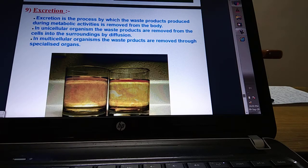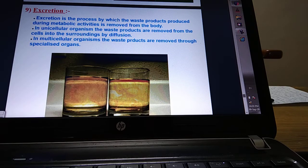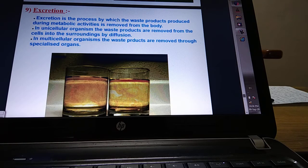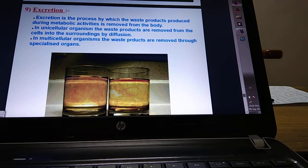These nitrogenous wastes are highly toxic and have to be removed from the body immediately. The process of removal of waste is known as excretion. In unicellular organisms, the wastes are removed by the simple process of diffusion into the surrounding cells. But in multicellular organisms, there are specialized structures and specialized organs through which these wastes are removed.